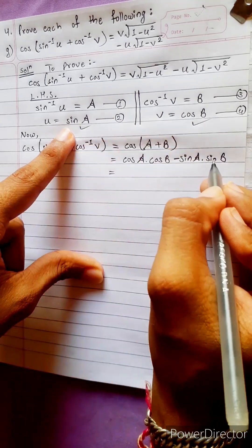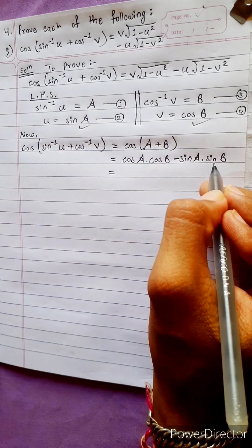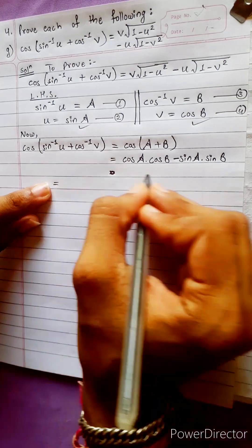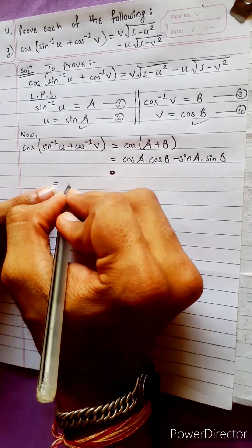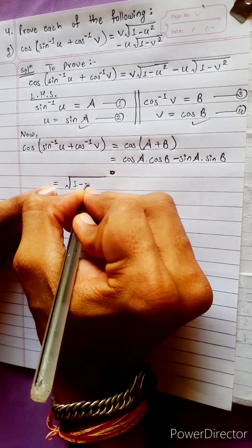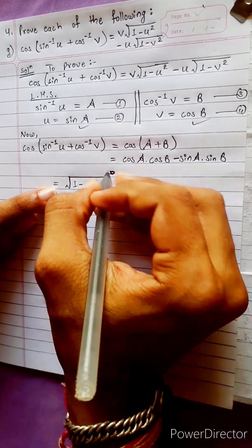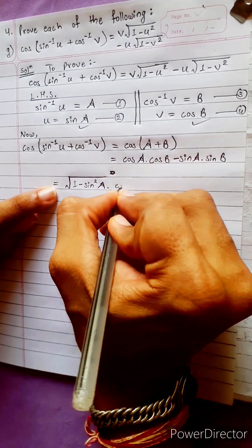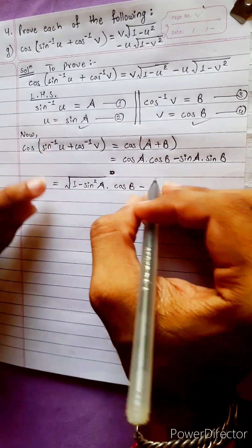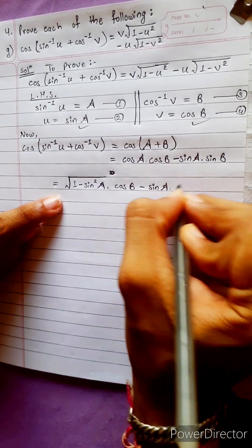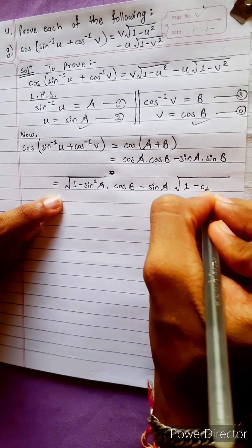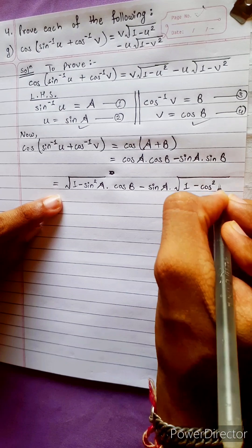cos(A+B) = cosA·cosB - sinA·sinB. Now we start here. cos A is equal to under root 1 minus sin square A. This formula: cos B is equal to sin B. Sin A is equal to sin B. Under root 1 minus cos square B.